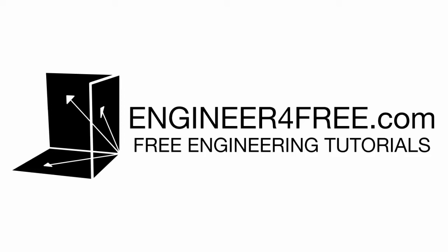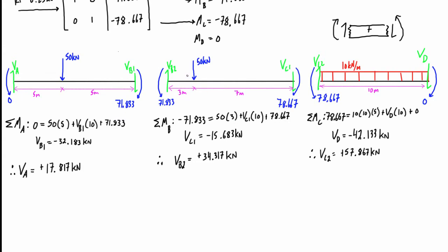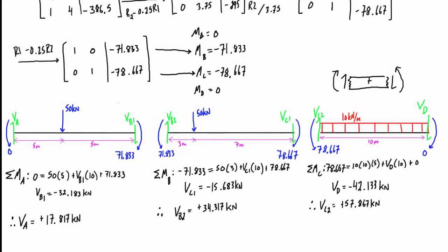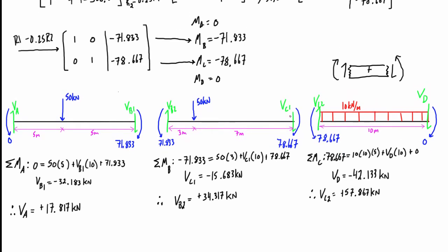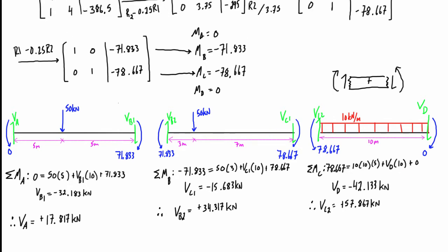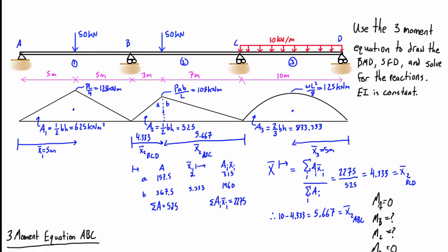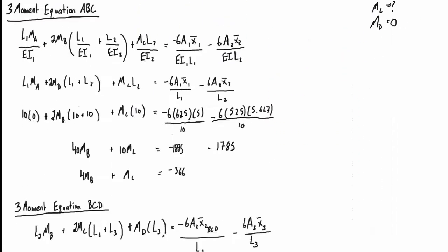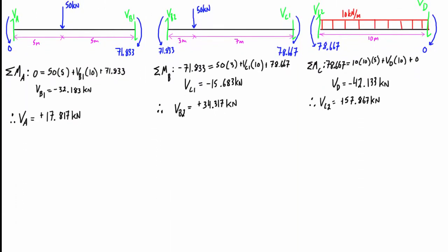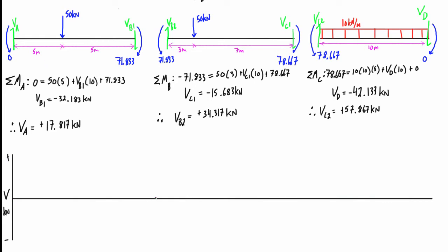Welcome back — this is part three, the final part of our second example for the three-moment equation. Picking up exactly where we left off: we just found all of the internal shears and moments on each end of the spans for this three-span beam, which is two degrees statically indeterminate. We're now ready to draw the shear force diagram and bending moment diagram.